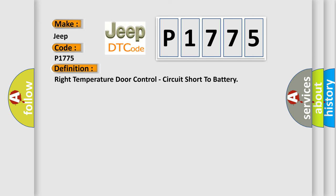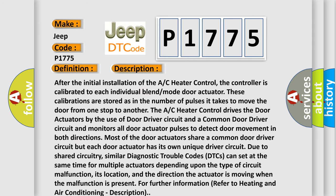After the initial installation of the AC heater control, the controller is calibrated to each individual blend mode door actuator. These calibrations are stored as the number of pulses it takes to move the door from one stop to another. The AC heater control drives the door actuators by the use of a door driver circuit and a common door driver circuit, and monitors all door actuator pulses to detect door movement in both directions. Most door actuators share a common door driver circuit, but each door actuator has its own unique driver circuit. Similar diagnostic trouble codes can set at the same time for multiple actuators depending upon the type of circuit malfunction, its location, and the direction the actuator is moving.